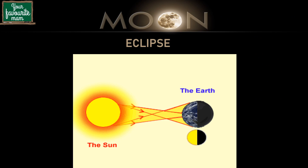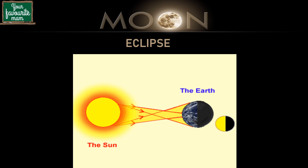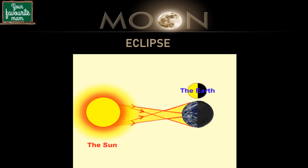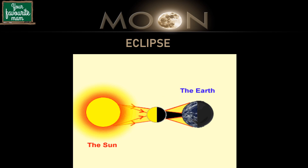Now we will talk about a very interesting topic: eclipses. When the sun, the earth and the moon are in the same straight line, the sun's light falls on the earth and the moon and casts shadows — that is an eclipse. There are two types of eclipses: solar eclipse and lunar eclipse.